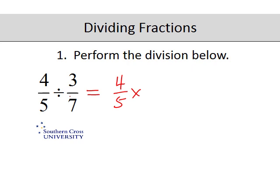Now we can't just change from divide to multiply without some sort of payback, some compensation. And our compensation is that the second fraction we need to invert or turn upside down, or the more mathematical term is take the reciprocal.